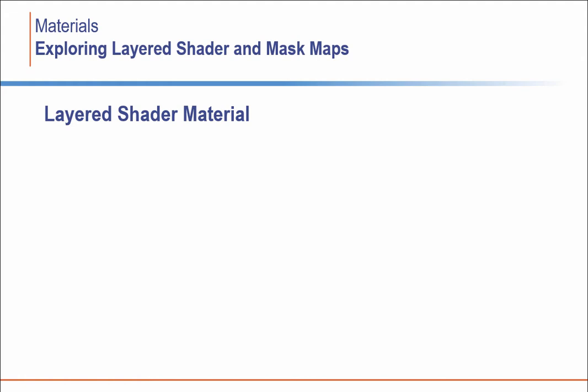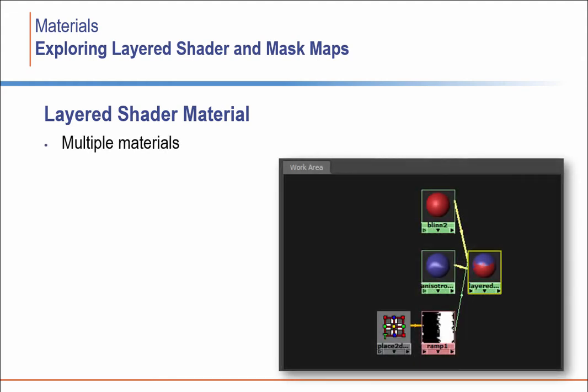Another method of applying multiple materials to single objects is the use of a layered shader material along with a mask map. The term for this technique is masking.